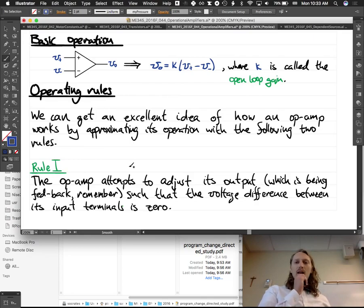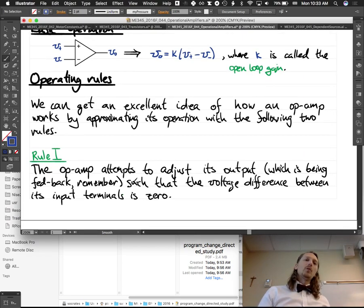So we can get an excellent idea of how an op-amp works by approximating its operation with the following two rules. So rule one is that the op-amp attempts to adjust its output, which is being fed back, remember, such that the voltage difference between its input terminals is zero. So it tries to adjust its output so that the V-plus minus V-minus is zero. So it's trying to make this difference zero right here. And it's making V-out be whatever it thinks it needs to be in order to do that. Now, I'm using it. I'm sort of anthropomorphizing it, and that's a very common thing to do.